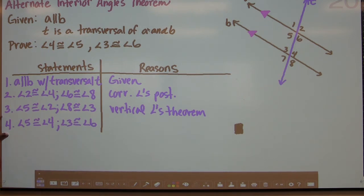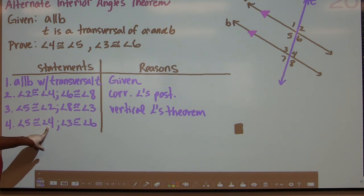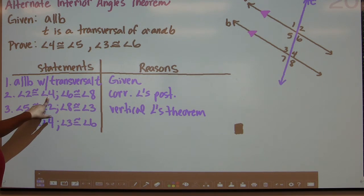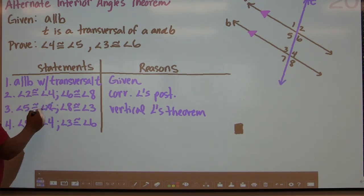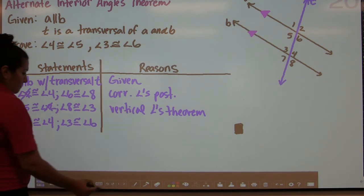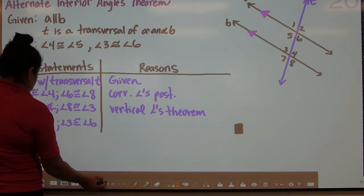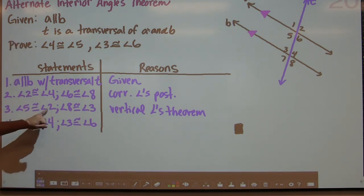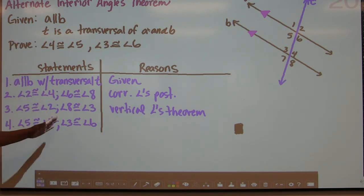The last step: angle 5 is congruent to angle 4. This comes from the transitive property. We know that 5 is congruent to 2 from Step 3, and 2 was congruent to 4 in Step 2. Therefore, we can eliminate the middle man, angle 2: 5 goes to 2, 2 goes to 4, so 5 goes to 4. In a similar fashion, 6 goes to 8 and 8 goes to 3, so 6 goes to 3.